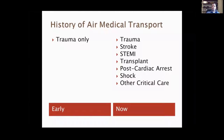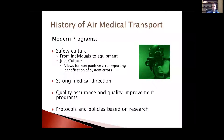Air medical transport started with rapid evacuation without much care en route. That model stayed in the military for many years until more recently, when the military moved toward the civilian model of providing substantial medical care during transport. Trauma systems developed in the U.S., and early air medical programs were just for trauma patients. It has since expanded to all critical illnesses and emergency conditions. In modern times, we provide a high level of care during transport, with a culture of safety, strong physician medical direction, quality assurance and improvement programs, and robust evidence-based protocols.